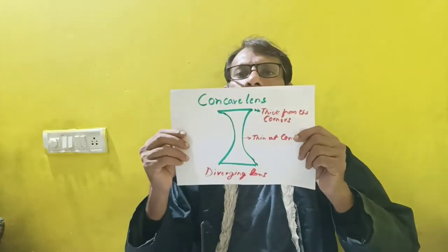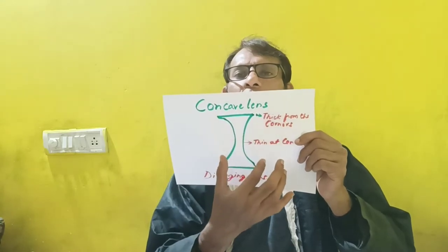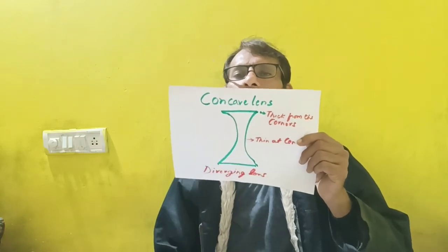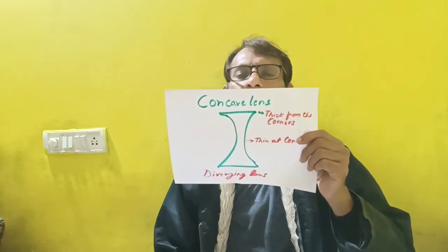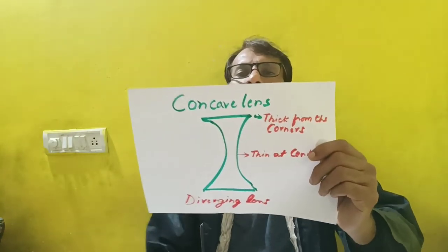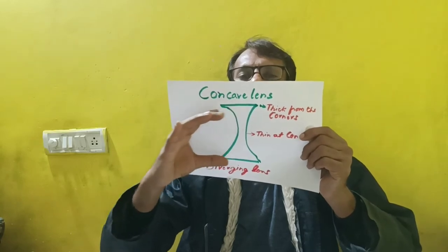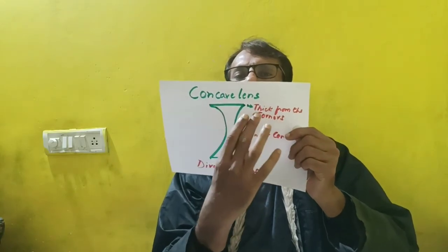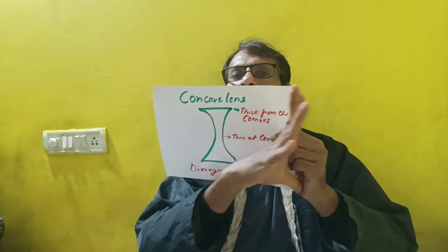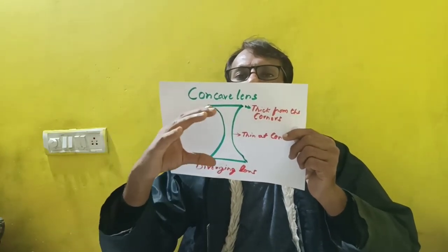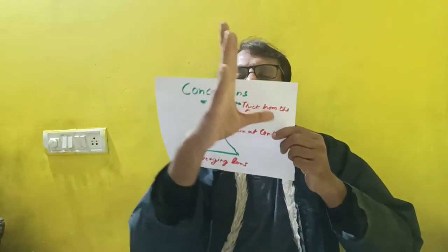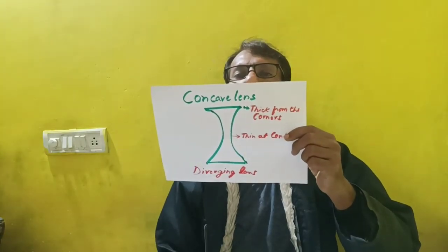Next, we have the double concave lens. The concave lens is thicker at the corners — both sides are thicker and in the middle it is thinner. This type of lens is called a double concave lens and is also called a diverging lens. Whenever a beam of light falls on the surface of this double concave lens, after refraction, the light gets diverged in every direction. So, this type of lens is called a diverging lens.